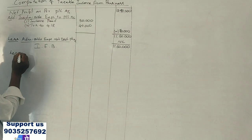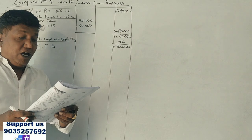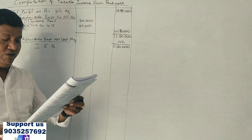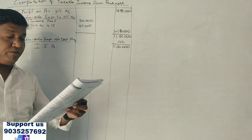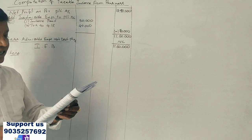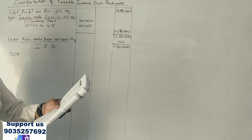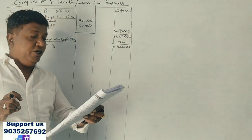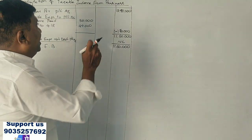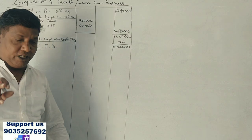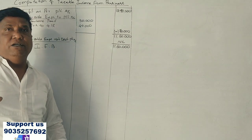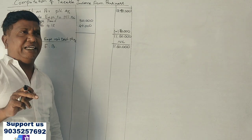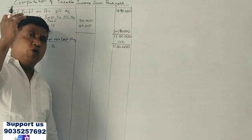Now, what are the deductions? Brought forward losses as per books of accounts is 1,25,000 and as per income tax is 1,50,000. Unabsorbed depreciation as per books is 25,000 and as per income tax is 75,000. As per tax provisions, we need to calculate the income tax, and the brought forward figure is 1,50,000.